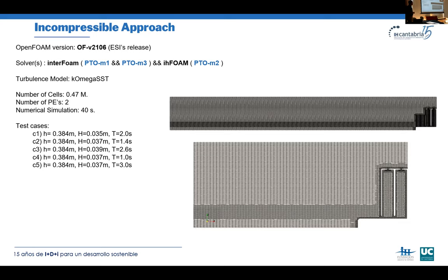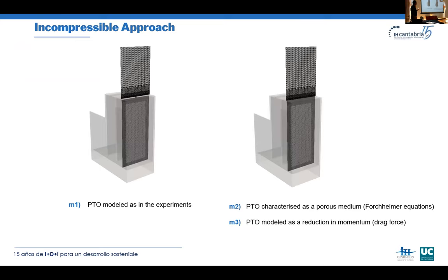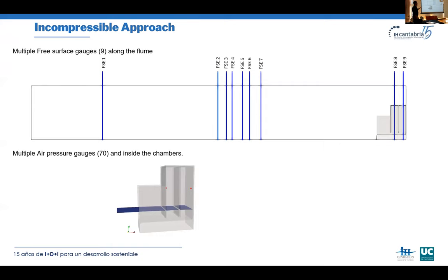We ran five sets of numerical tests, always using k-omega SST as the turbulence model. The mesh has around 0.47 million cells. We ran it with two processors, simulating 40 seconds. For the first approach, we model the holes as in experiments; in the second and third approaches, we define a porous area instead of the real holes.